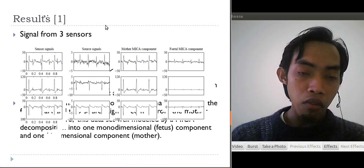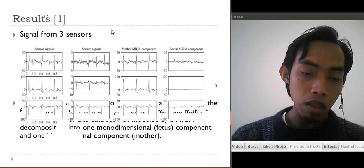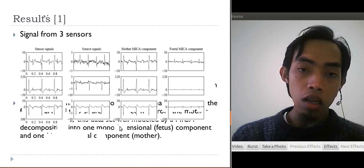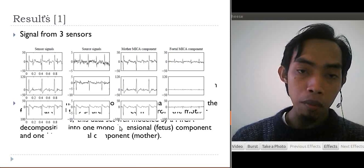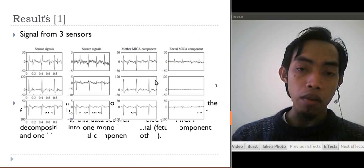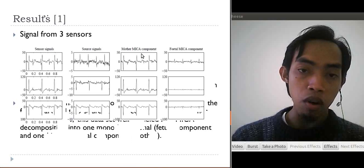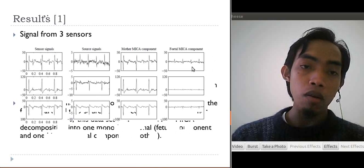We run the first step to obtain the source signal or mixing matrix, and then we group and obtain the multidimensional component from mother, this one, and fetal component. MICA works to separate multidimensional component from mother and fetal component.